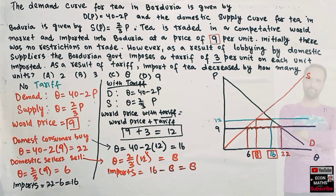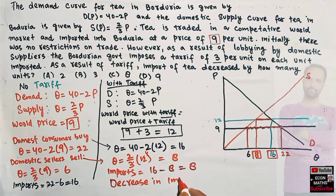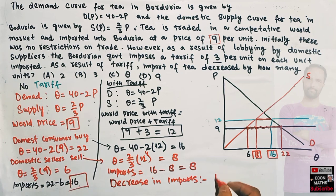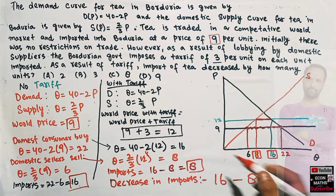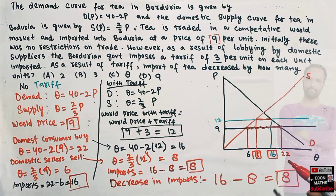Now we can find the decrease in imports. Originally we were importing 16 units; now we are only importing 8 units. Therefore, the decrease in imports due to the tariff = 16 minus 8 = 8 units. Imports decrease by 8 units when a per-unit tax of 3 per unit is imposed, given the stated demand and supply functions.